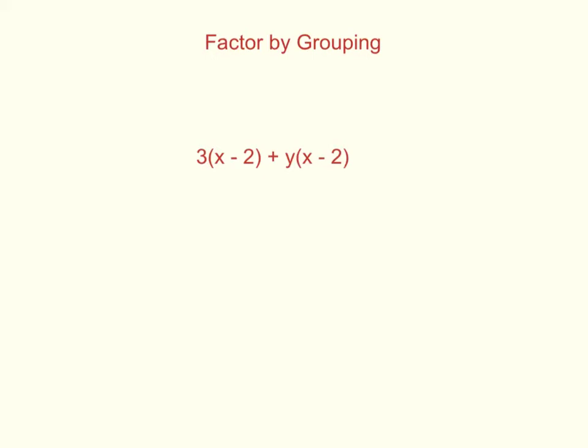If you look at the example, we have a similar thing in each of the terms, x minus 2. So we can actually factor that out to the front, and what we're left over with are the other terms. So then we have 3 plus y there. So when we factor 3(x minus 2) plus y(x minus 2), we have (x minus 2) times (3 plus y).